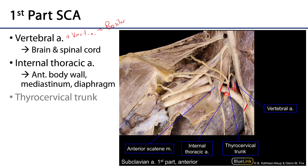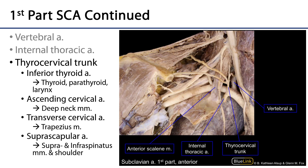Next is the thyrocervical trunk. Breaking down the name: 'thyro' refers to thyroid, 'cervical' to the neck — so it is a trunk serving various elements of the neck and shoulder. There are four basic branches from this trunk.